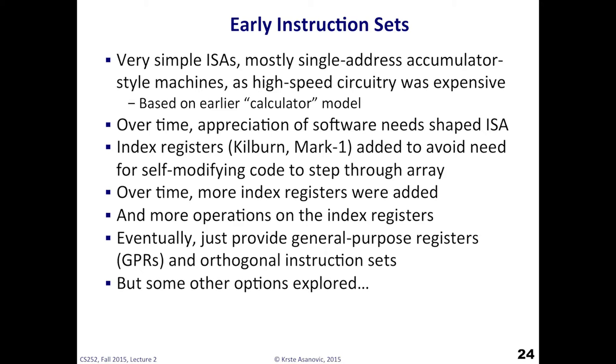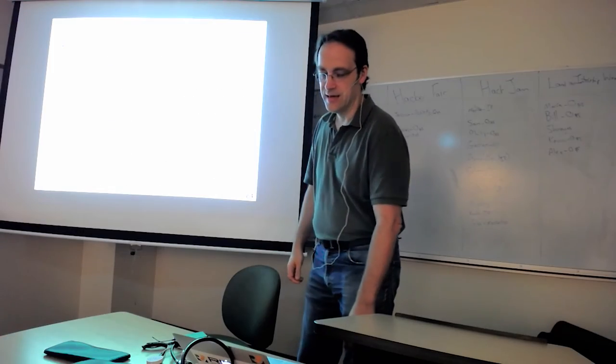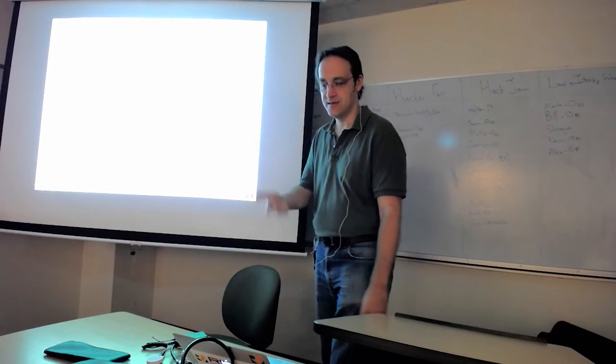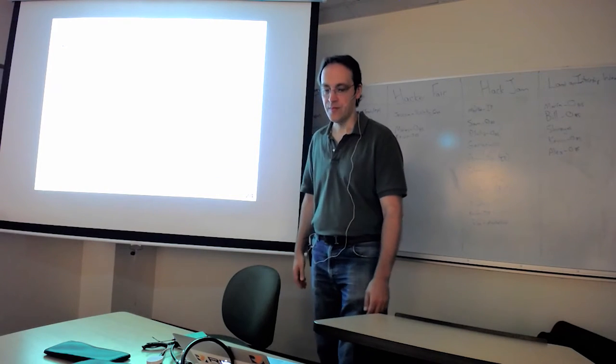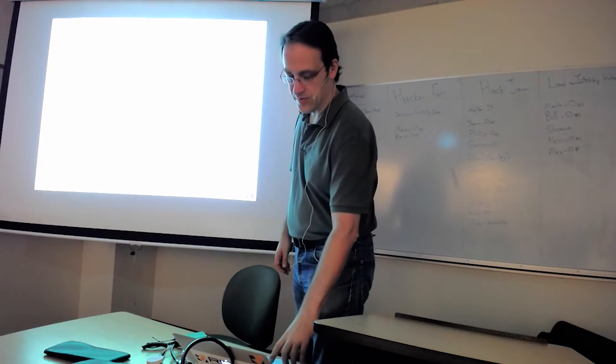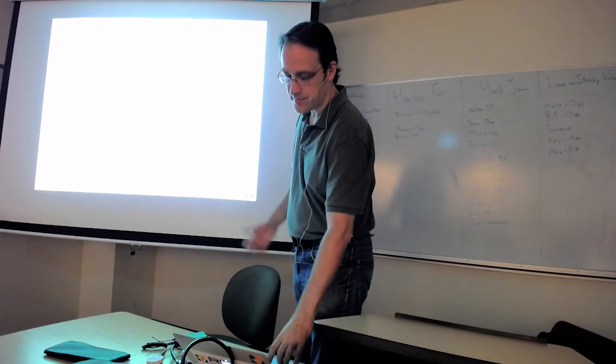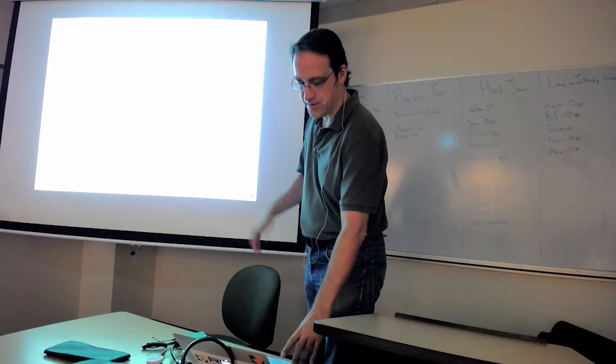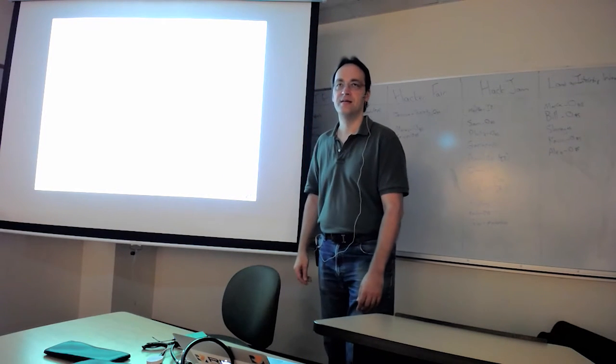Over time, people started building software and then realized, well, we need other things apart from what you'd expect from a calculator. And one of the big inventions was index registers. And this was added to avoid the need for self-modifying code to step through an array. When you look at the EDSAC in the problem set, you'll see how cumbersome it was to actually do array code with that thing. You basically have to modify the instructions in memory to change the address in each instruction to load a value from a different point in an array. And over time, as people work the machines, they're starting adding more registers. Also, as the components got cheaper, they could add more stuff in the CPU. So they added more index registers. And then they start to add operations on the index registers. And these things kind of evolved into being basically general purpose registers with instructions that operate on the values in the registers. So these things evolved over time.